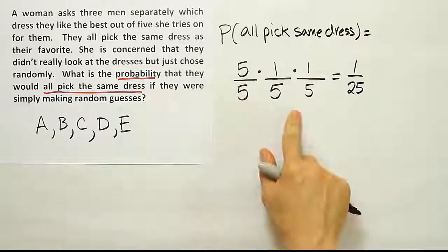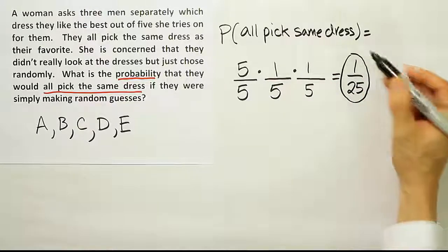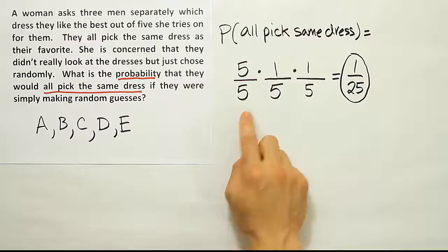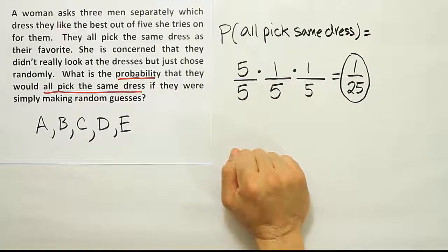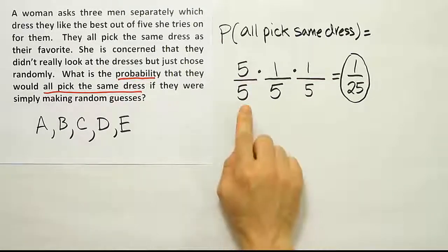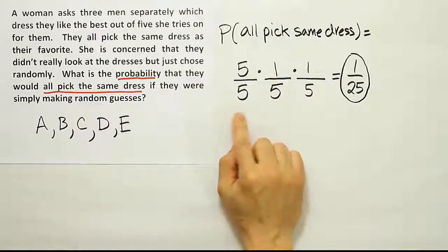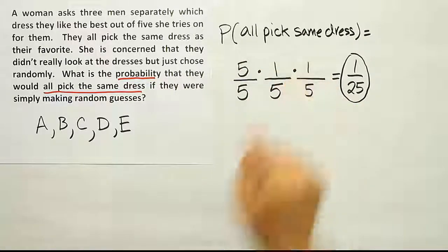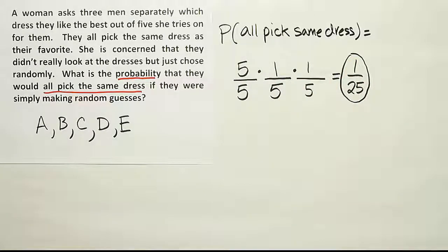The first term is one — one times anything is itself — then one fifth times one fifth: one times one is one, five times five is 25, giving 1/25. This is mathematically equivalent to the first method, but much simpler. It works because the first guy can pick anything he wants as long as the others follow. The most common wrong answer is one fifth times one fifth times one fifth, but that assumes the first guy had to pick a specific dress, when in fact his choice doesn't matter. The probability they all pick the same dress by random guessing is 1/25.